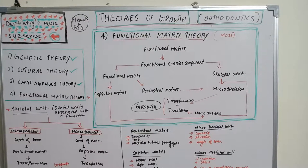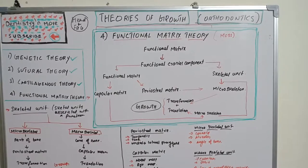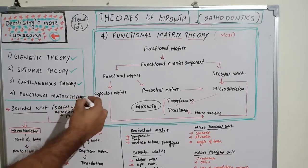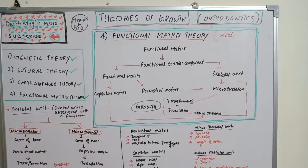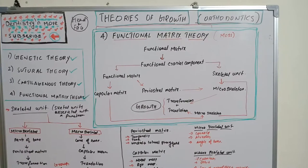To summarize, we have covered four major theories of growth: genetic theory, sutural theory, cartilaginous theory, and functional matrix theory — the four most commonly examined theories. Functional matrix theory is slightly complex but organized into two clear parts. If you have any particular chapter or subject you'd like covered, please mention it in the comments. Thank you.